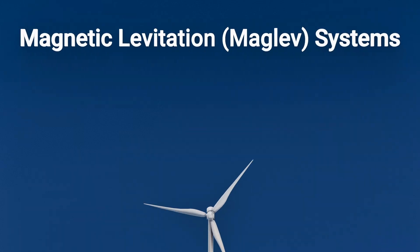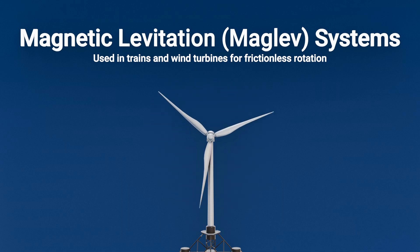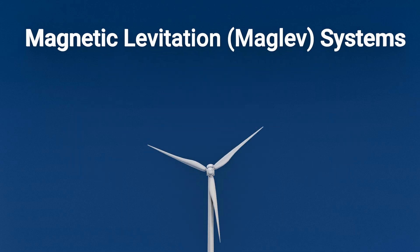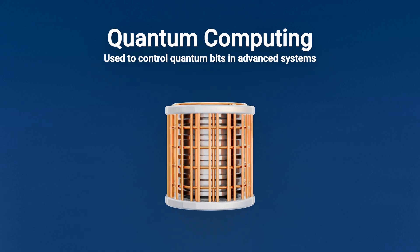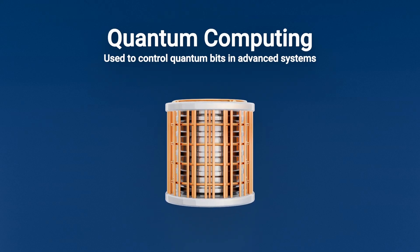4. Magnetic levitation, maglev systems, used not just in trains, but also in wind turbines for frictionless rotation. 5. Quantum computing, using magnetic fields to control quantum bits or qubits in advanced computer systems.